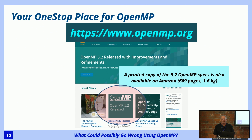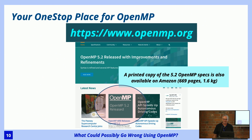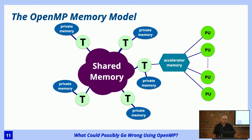If you're interested in OpenMP, go to www.openmp.org. You can get the specs there — the 5.2 spec is a whopping 669 pages. It came a long way from the original 50 pages in version 1.0. But that's the way it is.